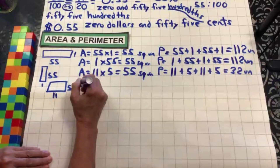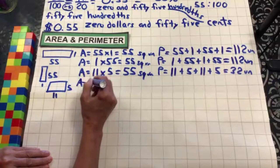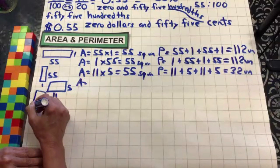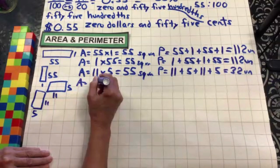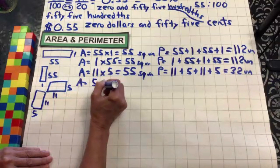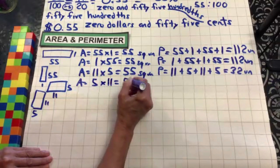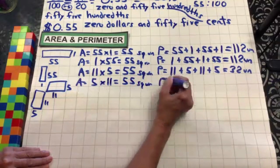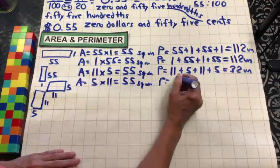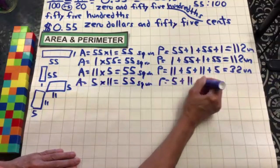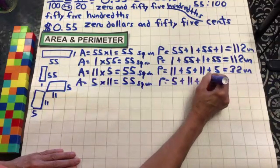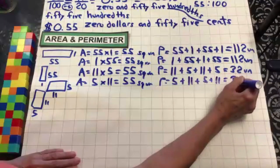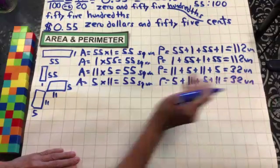Another way we could write that would be a 5 by 11: 5 times 11 equals 55 square units. Same numbers, different order, still 32 units for the perimeter. Let's move on to volume.